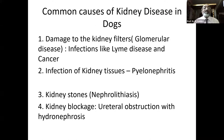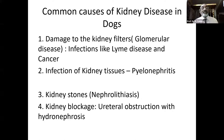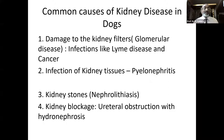What are the common causes of kidney disease in dogs? From a practitioner's perspective: number one is damage to the kidney filters — glomerular disease, examples being Lyme disease and cancer. Infection of kidney tissues is pyelonephritis. Earlier, people used to call and treat nephritis as always a bacterial infection and think of antibiotics as the answer — that is not so. The third most important is kidney stone, referred to as nephrolithiasis, and kidney blockage — ureteral obstruction — which leads to hydronephrosis.